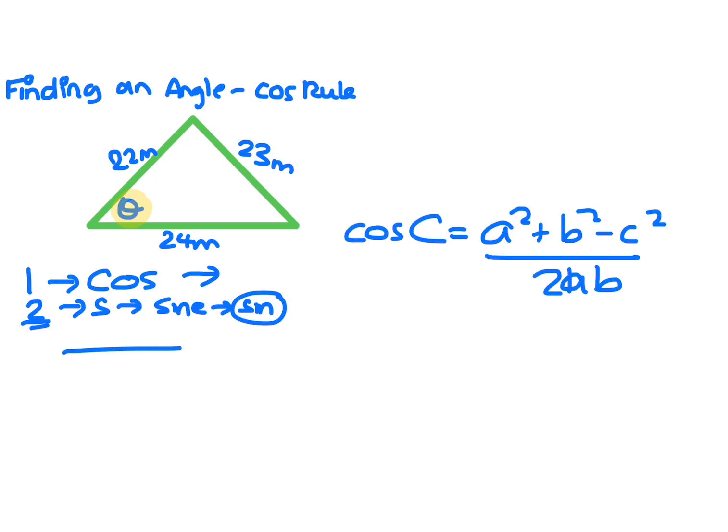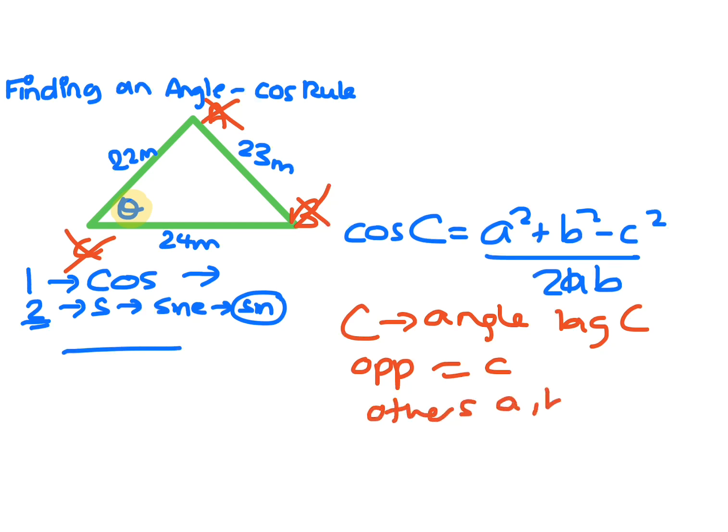The next step is just to label each side. Now if you happen to have big letters there, just ignore them because you're going to use our letters to label stuff. So what you want to find, that's the angle, that's the big C. Opposite equals little c. The other sides are a and b.